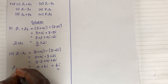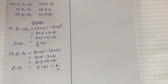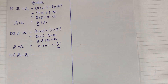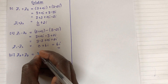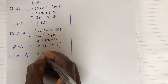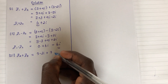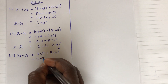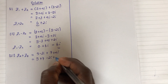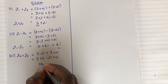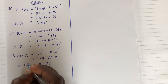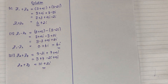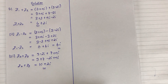So z1 minus z2 gives us 6i. The third example says we should add z2 and z3. We have z2 as 3 minus 2i plus z3 which is 7 plus 4i. Combining real terms: 3 plus 7 equals 10. Combining imaginary terms: minus 2i plus 4i equals plus 2i. So z2 plus z3 equals 10 plus 2i, where 10 is the real term and 2i is the imaginary term.